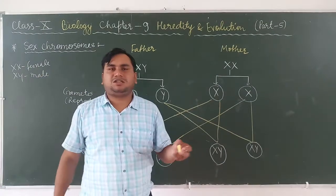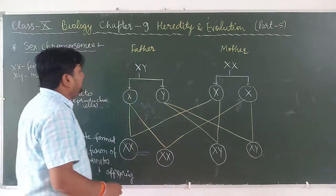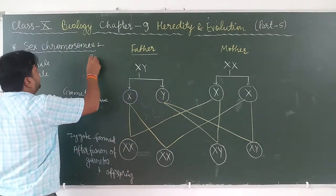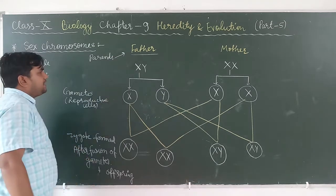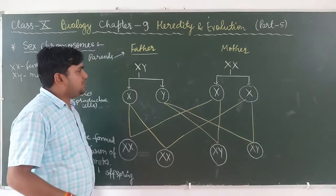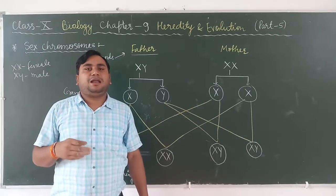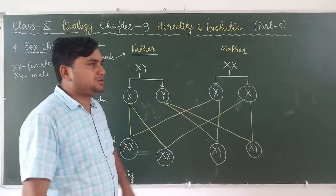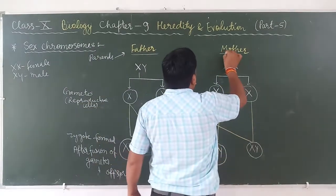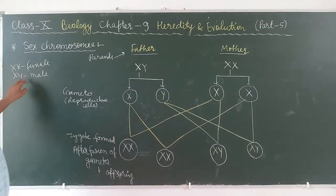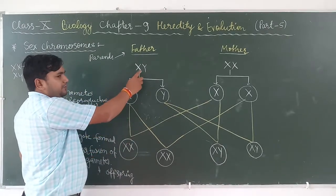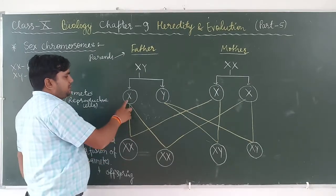Next is sex determination by the sex chromosomes. Here you can see the father and mother, simply known as the parents. The father has the male sex chromosome XY, and the mother has XX, the female chromosome. We know that XX is for female and XY is for male. After they are separated, X and Y form single units called gametes: XY from father, XX from mother.